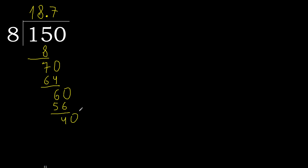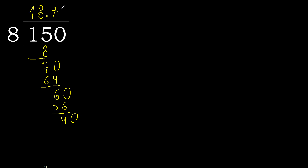Complete. Decimal point. 40. 8 multiplied by 5 is 40 — not greater. Subtract: 0. Therefore finish. 150 divided by 8 is here.